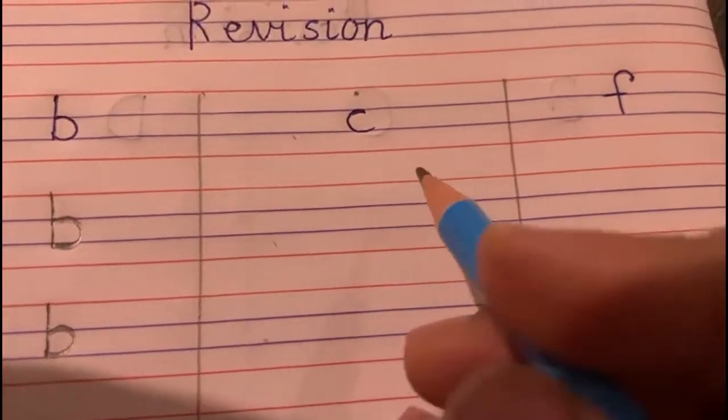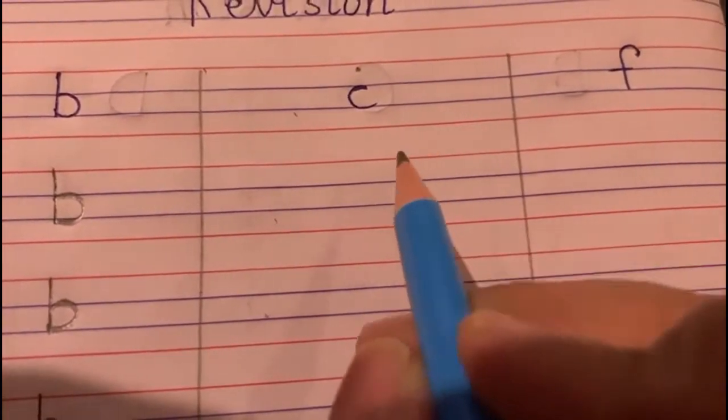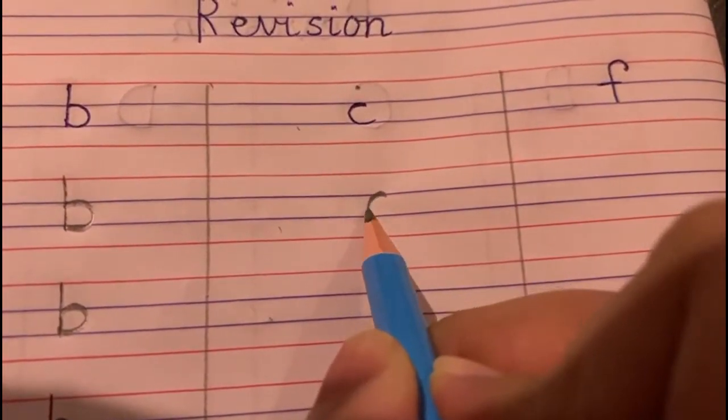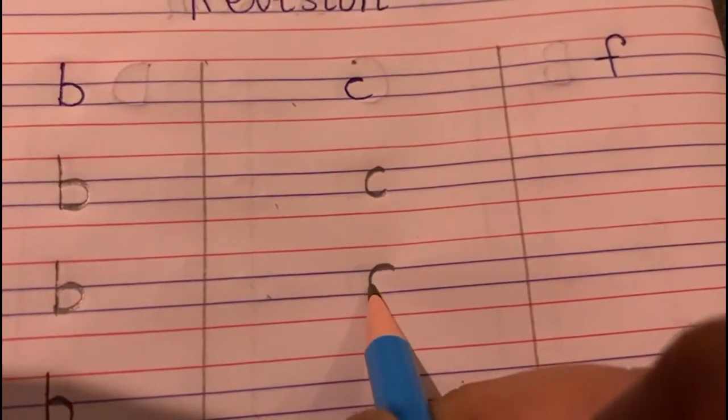B says 'buh'. Now moving to letter C. When we write C, we are only going to use the two blue lines. Start from the top blue line, make a curve to the second blue line — C! C says 'k'. Children, I want your work to be neat.